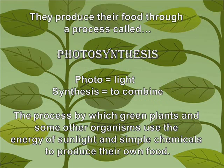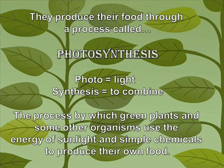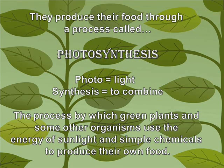Plants produce their food through a process called photosynthesis. Photo means light, and synthesis means to combine. The definition for photosynthesis is the process by which green plants and some other organisms use the energy of sunlight and simple chemicals to produce their own food.